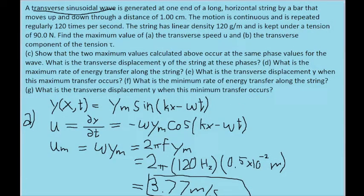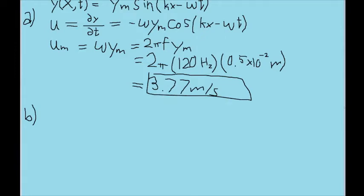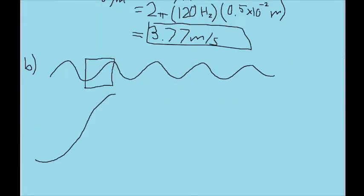Part B asks about the maximum value of the transverse component of the tension. That's trickier because we don't have simple formulas for it — the transverse component just refers to the y direction. What we can do is take a simplified diagram of a transverse wave and analyze what the transverse component will be in terms of angles. At any point in the wave, there's going to be an x component and a y component based on the angle theta we're looking at.